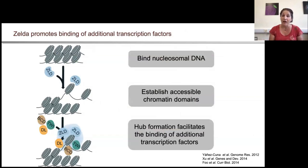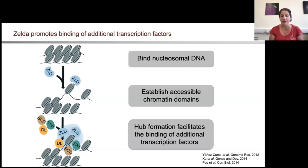We and others have shown that Zelda has these canonical features of a pioneer factor. It can bind to nucleosomal DNA, it can establish accessible chromatin domains, and then likely through the formation of hubs, it can facilitate the binding of additional transcription factors like Dorsal, Bicoid, and Twist.